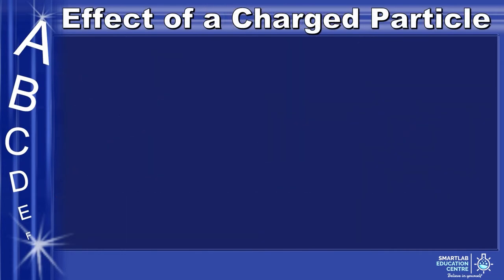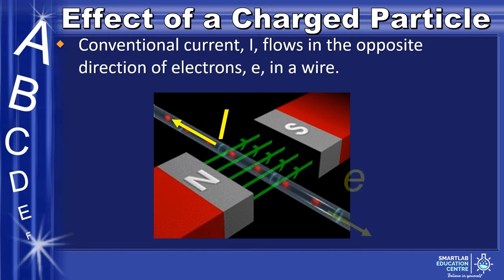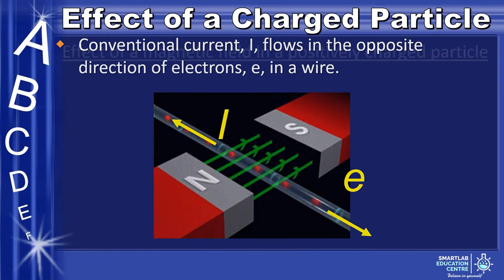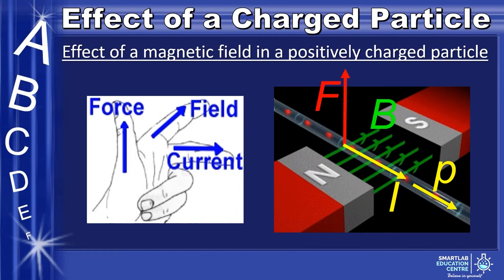Now, let us talk about the effect on a charged particle. By convention, we always take current as the flow of positive charges. However, take note that in a wire, conventional current, labeled as I, is in the opposite direction to the flow of electrons, labeled as E. We can use Fleming's left-hand rule to determine the force that acts on a particle. For example, using the flow of positive charges, the conventional current is taken as the flow of positive charges, and by the left-hand rule, in this scenario, the positive charges will experience a force going upwards.